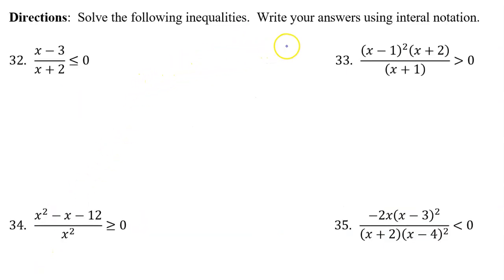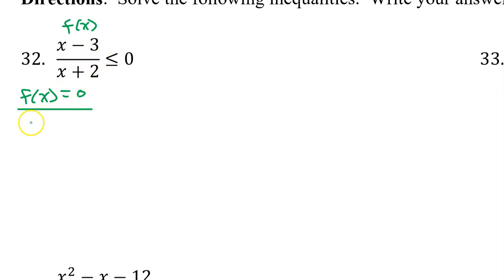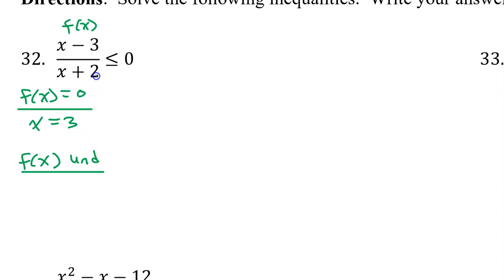Solve the following inequalities. Write your answers using interval notation. First we find the zeros of the left side of the inequality, which we will call f of x, where f of x equals zero. A rational function will equal zero where the numerator is equal to zero, so that's just going to be x equals three. We also need the values that will cause f of x to be undefined — that's where the denominator is equal to zero, so x equals negative two. We'll call these the critical values.